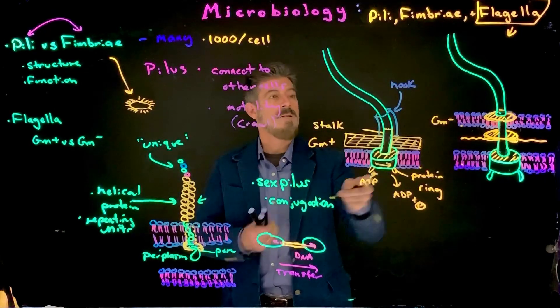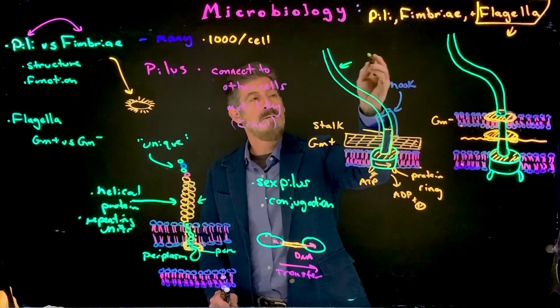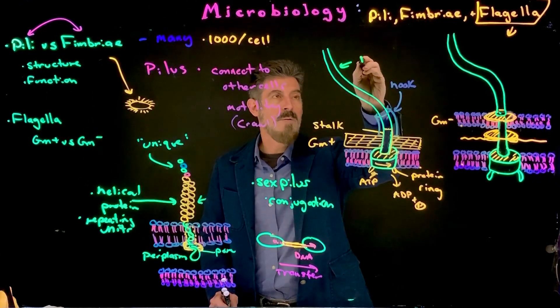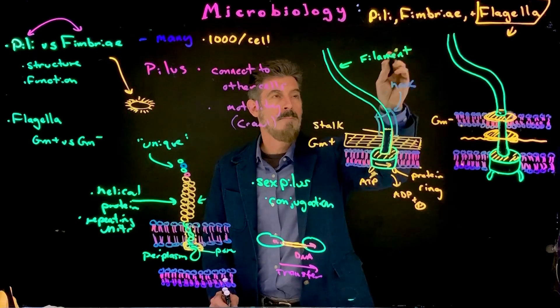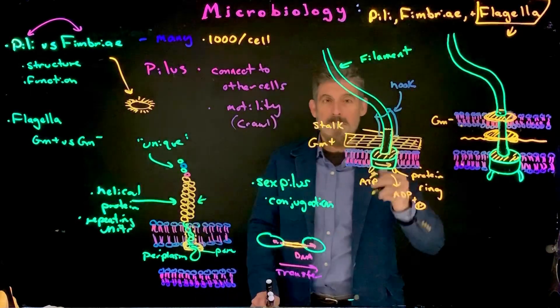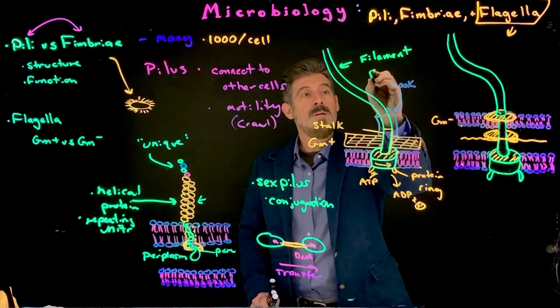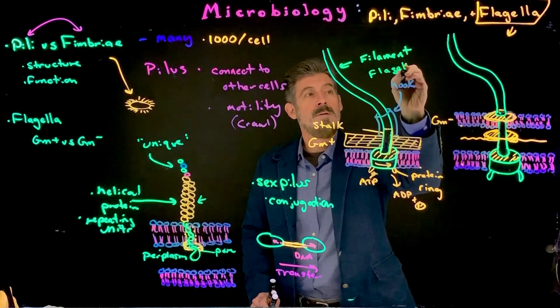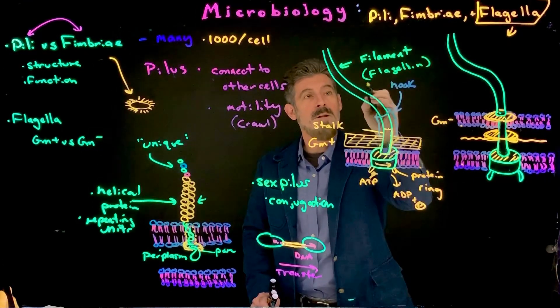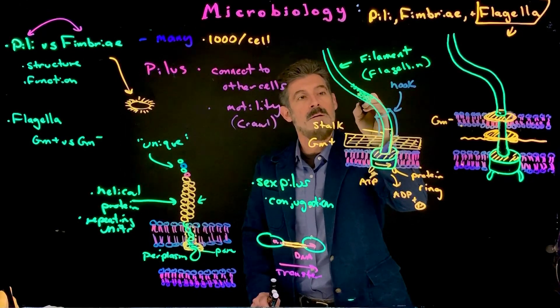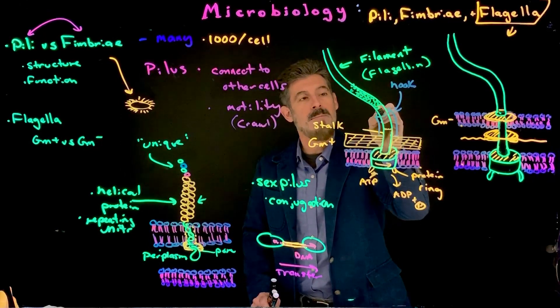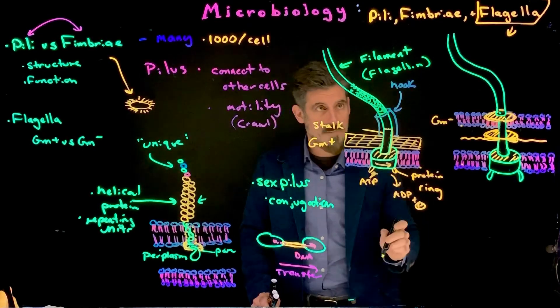It's called the hook. And then, finally, sticking off here is the flagella structure that we really refer to as the filament. It's made up of repeating units of protein called flagellin. So, flagellin is the name of the protein, so there's all these little units that are making up this whole entire filament structure.